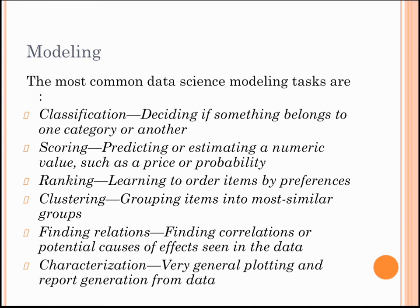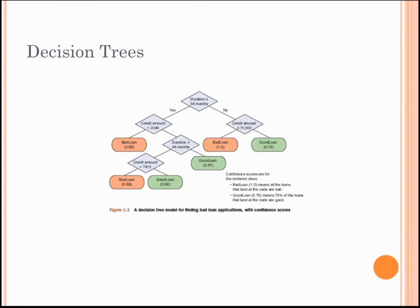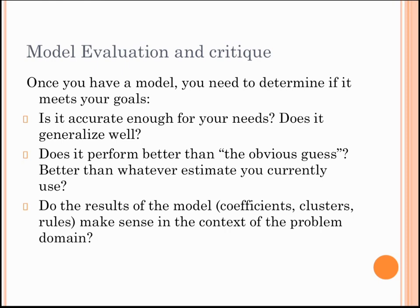The next stage is modeling. Some common data science modeling tasks are classification, scoring, ranking, and clustering. Classification is deciding if something belongs to one category or another. Scoring is predicting a numeric value such as a price or probability. Ranking is learning to order items by preferences, and clustering is grouping items into most similar groups. This is an example of a classification model — a decision tree.